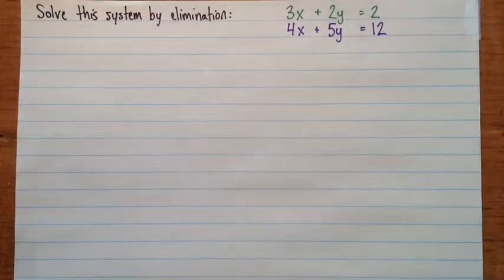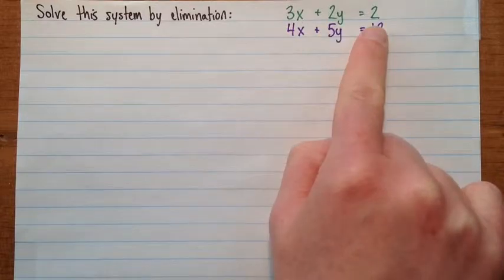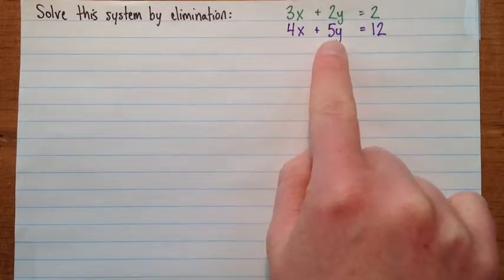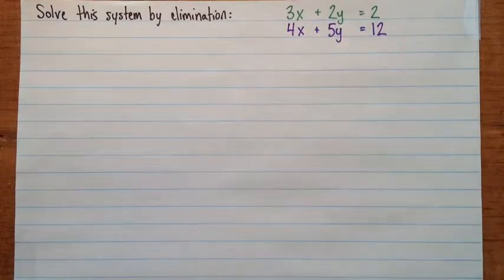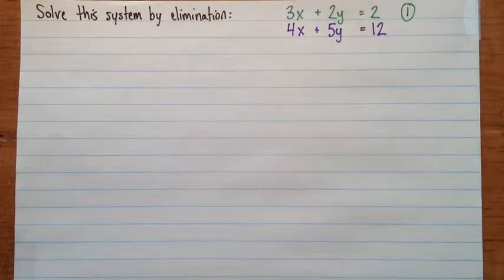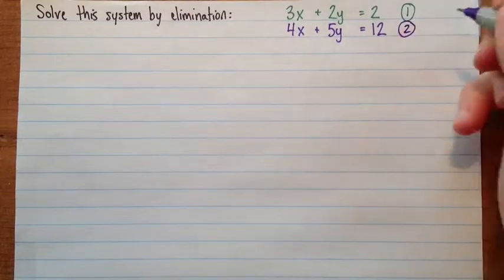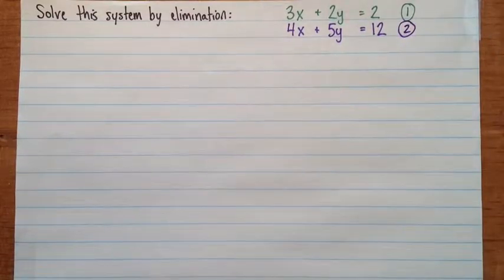Okay, so this question asks us to solve the system by elimination. And we've got 3x plus 2y equals 2, and 4x plus 5y equals 12. So the first thing to do, like always, is to just give these guys names. And you can call them numbers, or letters, or people names if that amuses you. But I guess numbers is maybe the simplest.